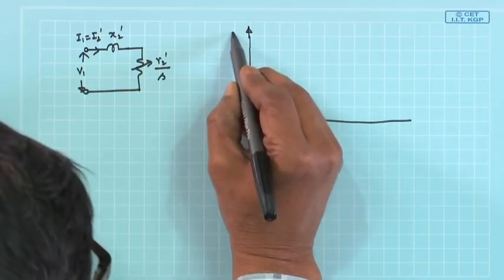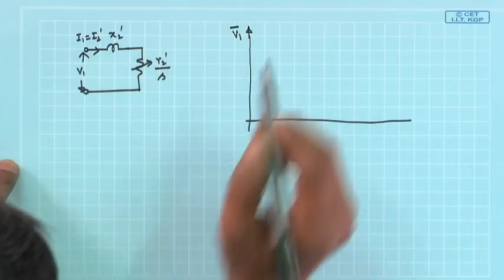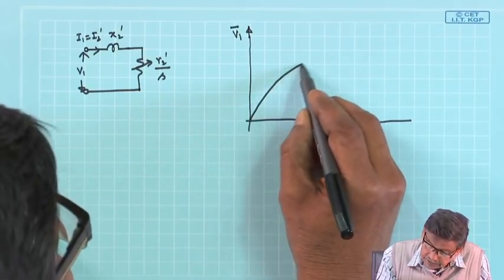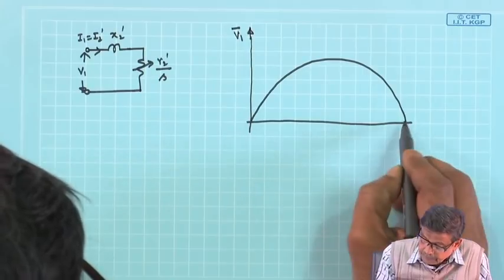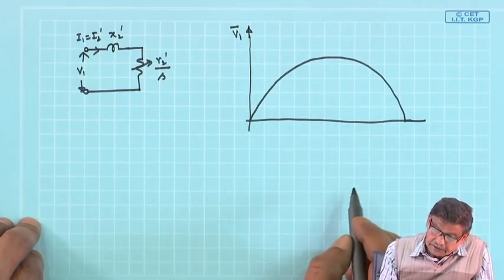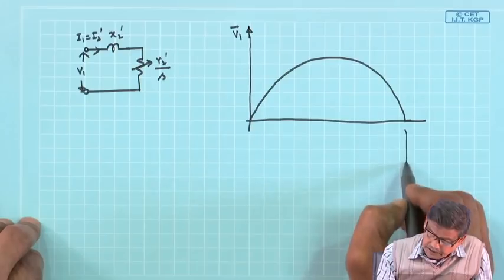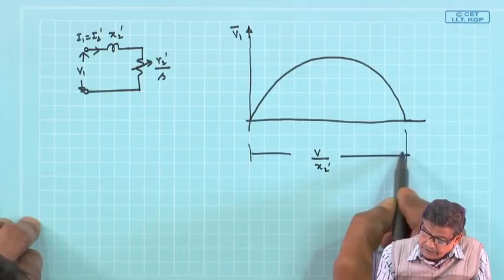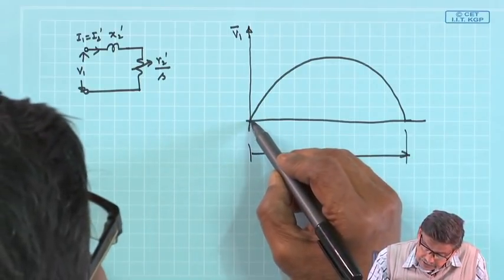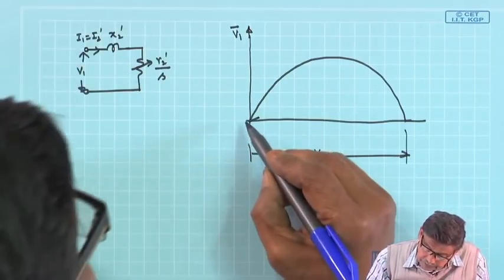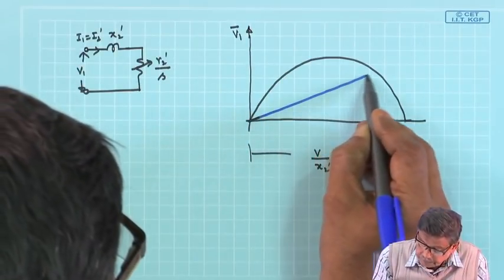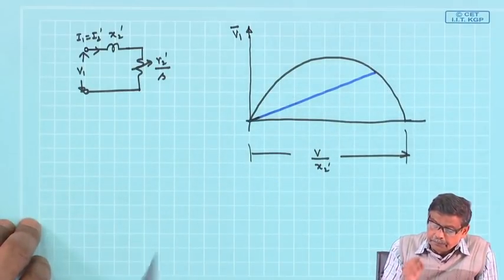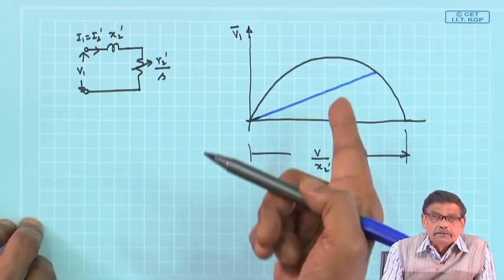If we consider the voltage phasor along the y-axis, then the current phasor will trace a circle. The diameter of this circle is V divided by X₂ dashed. At s equal to 1 (standstill condition), we draw a line on the perimeter of this circle where the tip of the current phasor lies.